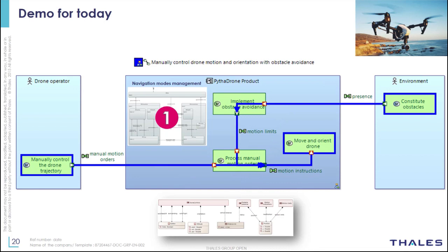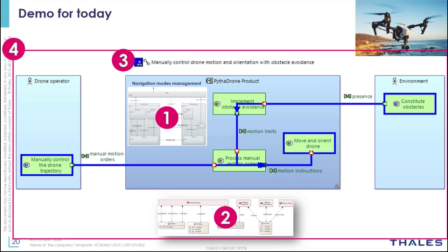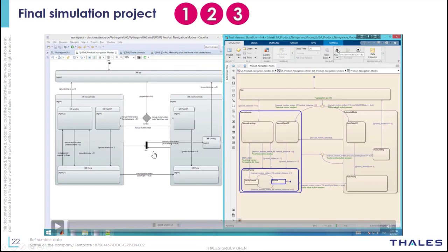We will first work on the mode machine — build the simulation model of it and validate it individually. To work on this mode machine, we have to define the complex data structures carried by the functional change that triggers the transition, so we will also export the data structures from Capella to Simulink. Then we will work on the functional chain, detailing the specification of each function individually, and integrating them together at the functional chain level to validate them in context. Last, we will integrate both the functional chain and the mode machine to validate the emerging behavior from their interaction.